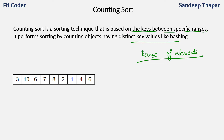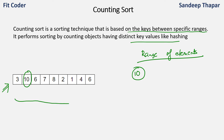If we are given this input array, the first step is to find the maximum value in the array. In this case the maximum value is 10, so we know the upper value is 10. When the maximum value in the array is close to the number of elements in the array, counting sort is useful.